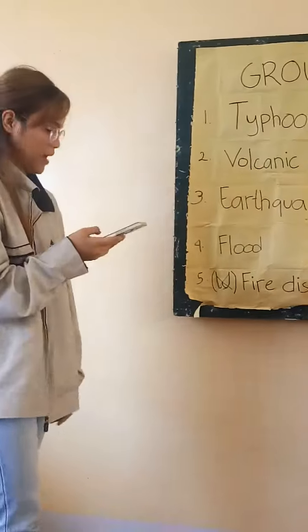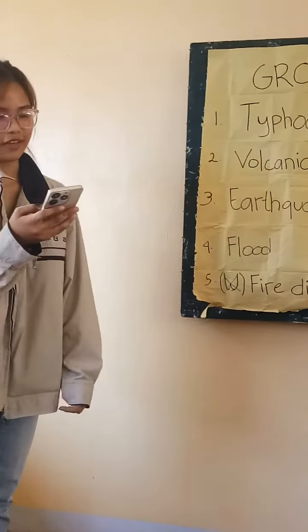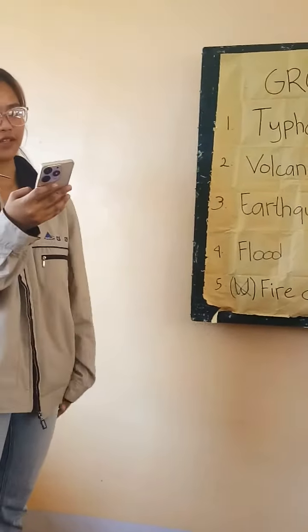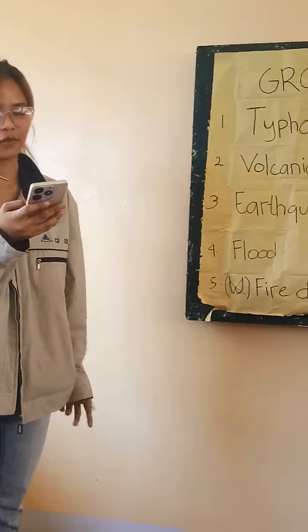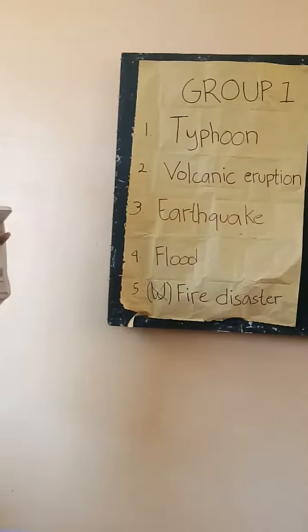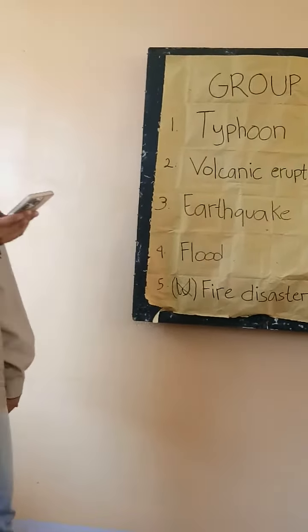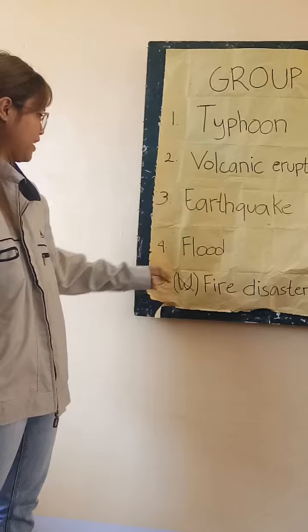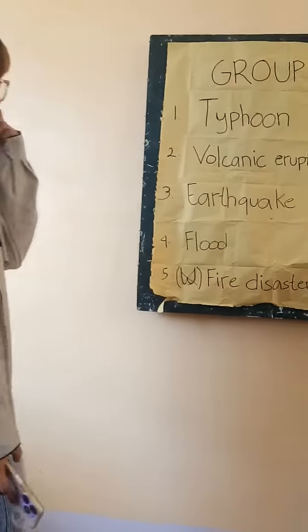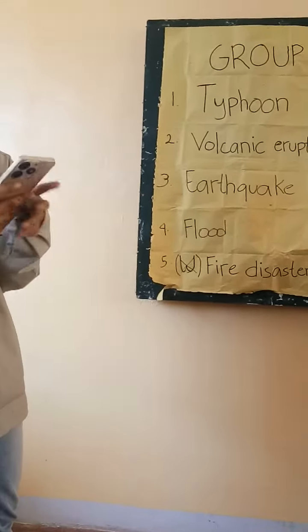The fourth is flood. Floods are the most frequent type of natural disaster that occur when an overflow of water submerges land that usually stays dry.